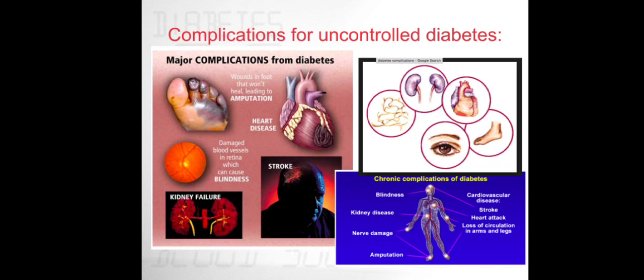Major complications from uncontrolled diabetes include wounds that won't heal or cause infections, potentially leading to amputation of that part of the body. There is an increased risk of heart disease, damaged blood vessels in the retina which can cause blindness, increased risk of stroke, and kidney failure.